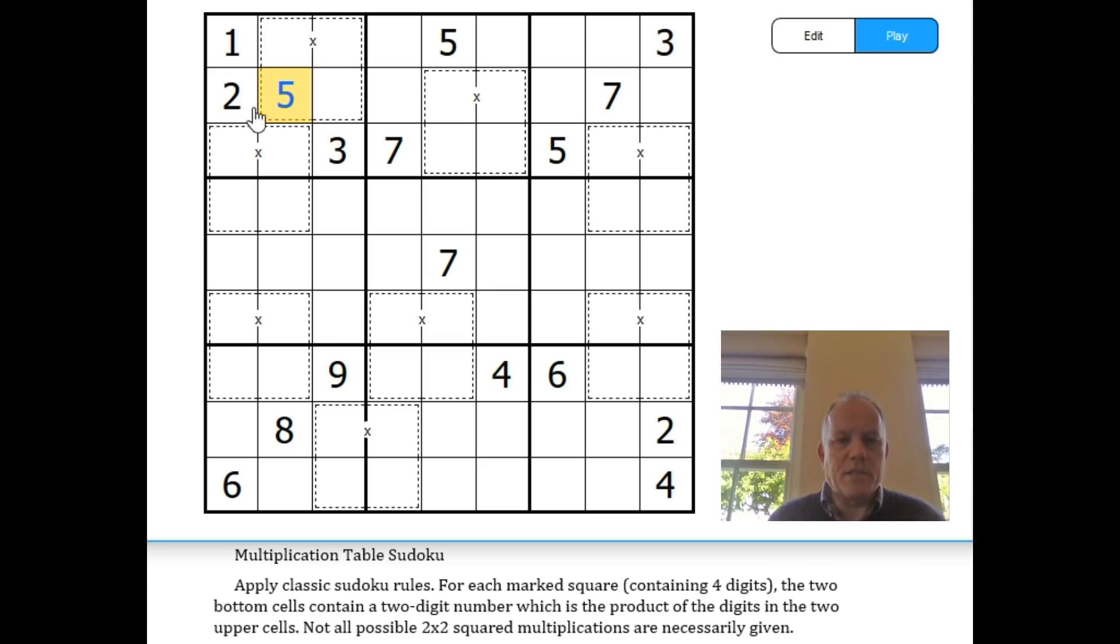We've already got one, two, and three in the box, so this can only be four, six, eight, or nine. 54 could be nine times six, 56 could be seven times eight. 54 would give seven times eight down here, and that's not possible because there's a seven there. So it must be 56.